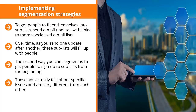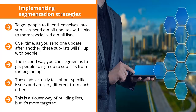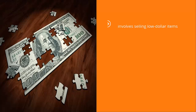These lists also only offer incentives that address tightly defined specific issues. This is a slower way of building lists, but it's more targeted. With everything else being equal, the slow growth rate of your mailing lists can be offset by the higher sales conversions of people signing up to those specialized sub-lists.